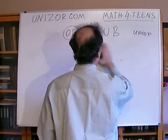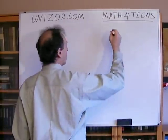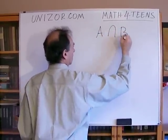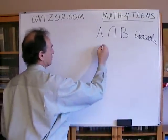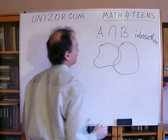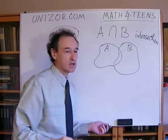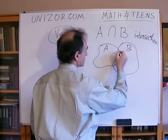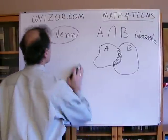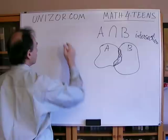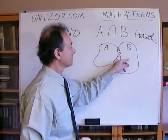The next operation is called intersection. These diagrams, by the way, are called Venn diagrams. If this is A and this is B, intersection — pretty obvious from the word itself — is something which belongs to both. Only this area which belongs to both is an intersection. We very often use the word 'and' to describe intersection, because these are elements which belong to A and B, to both of those.